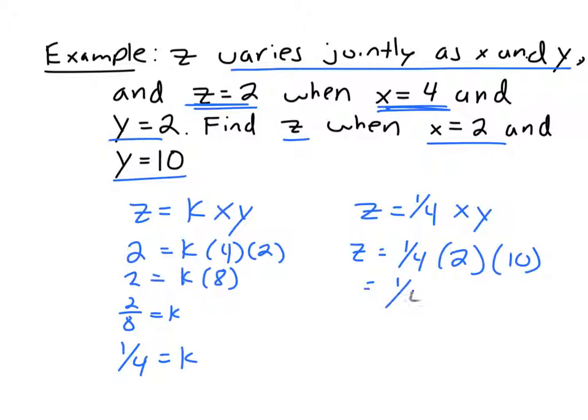Let's find z when x equals 2 and y equals 10. So this would be 1 fourth, 2 times 10 is 20. So this is the same thing as saying 20 divided by 4, and 20 divided by 4 is 5.